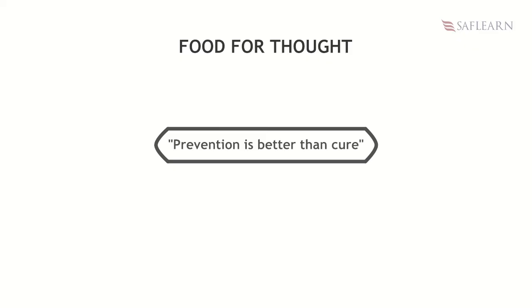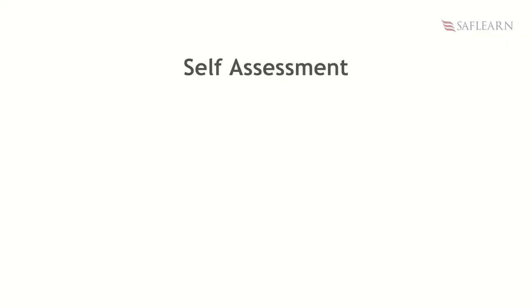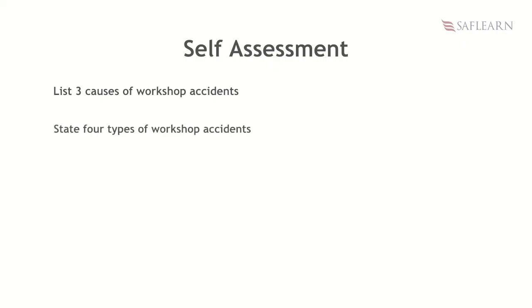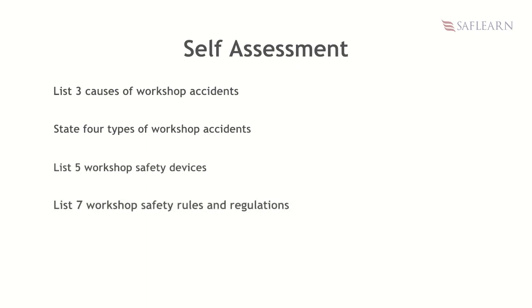It is wiser to prevent an accident from happening than to cure the harm done after the accident. This brings us to the end of the lesson on workshop safety. Here are 7 questions you should be able to answer: list 3 causes of workshop accidents, state 4 types of workshop accidents, list 5 workshop safety devices, list 7 workshop safety rules and regulations, and explain accident prevention techniques and measures.